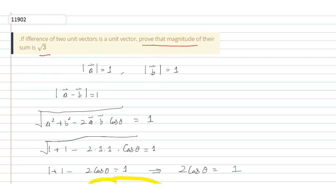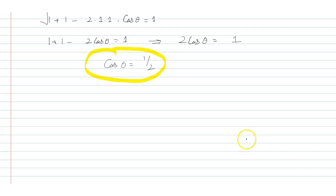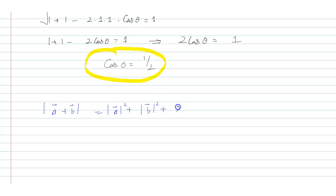Now we need to find the magnitude of A vector plus B vector. The magnitude of A vector plus B vector equals the square root of the magnitude of A vector squared plus the magnitude of B vector squared plus 2 times the magnitude of A vector times the magnitude of B vector times cos theta.